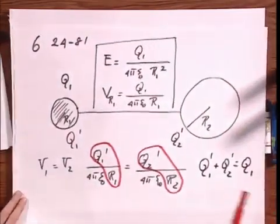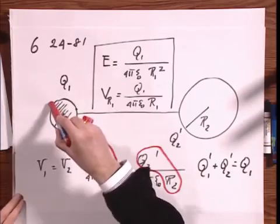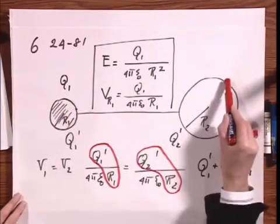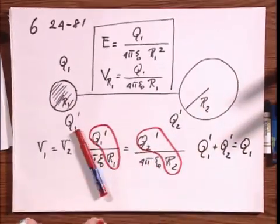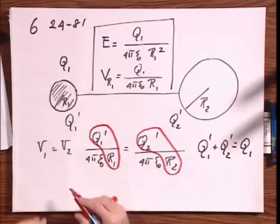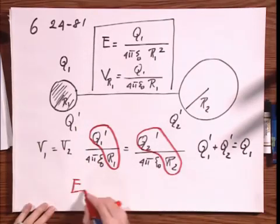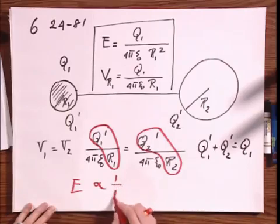Now, I want you to do the electric vectors right here at the surface and right here at the surface, and you will then see that the electric vector right at the surface are going to be proportional to 1 over R.